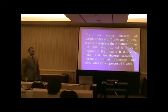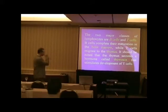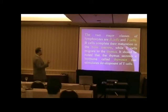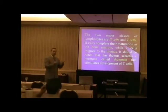B cells are named for bone because they complete their maturation in bone marrow. T cells migrate to the thymus — that's where you get the T. The thymus secretes a hormone called thymocin that stimulates the development of T cells, so the thymus creates thymocin and that stimulates the production of T cells.